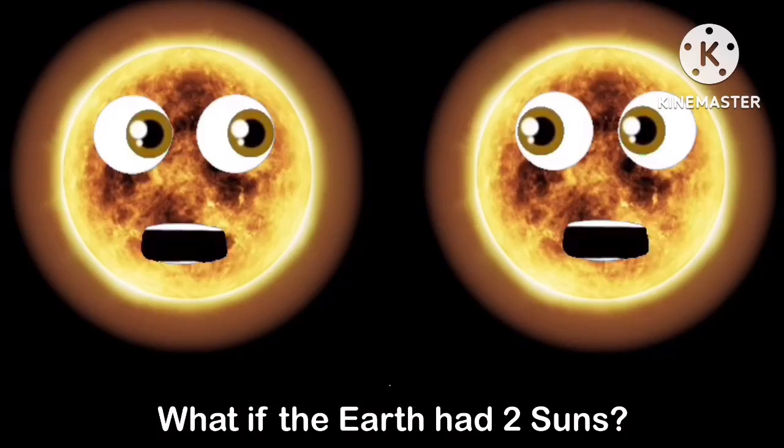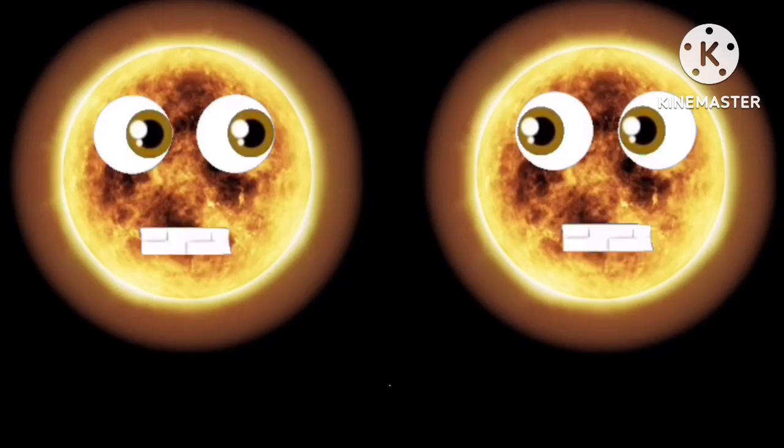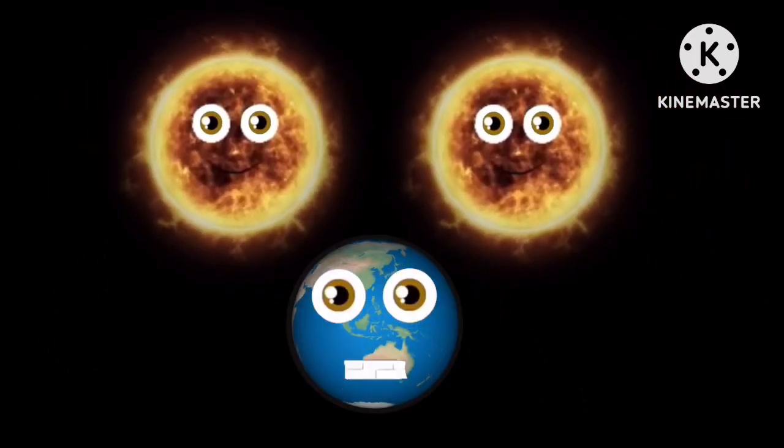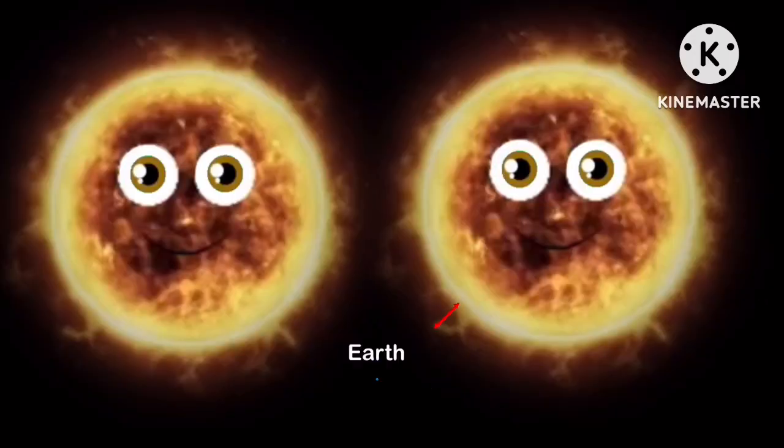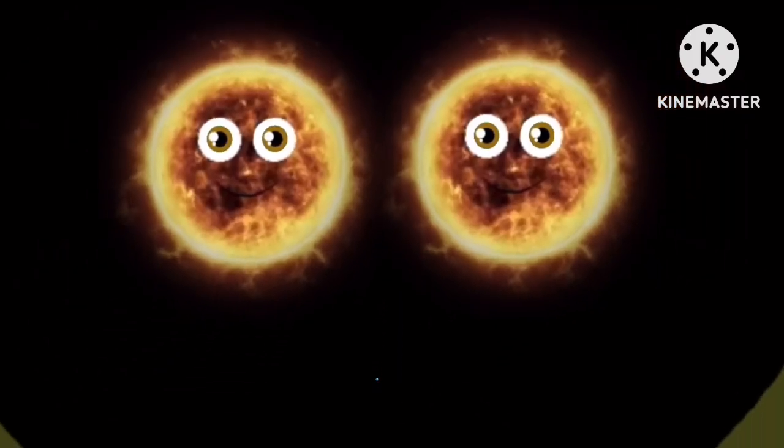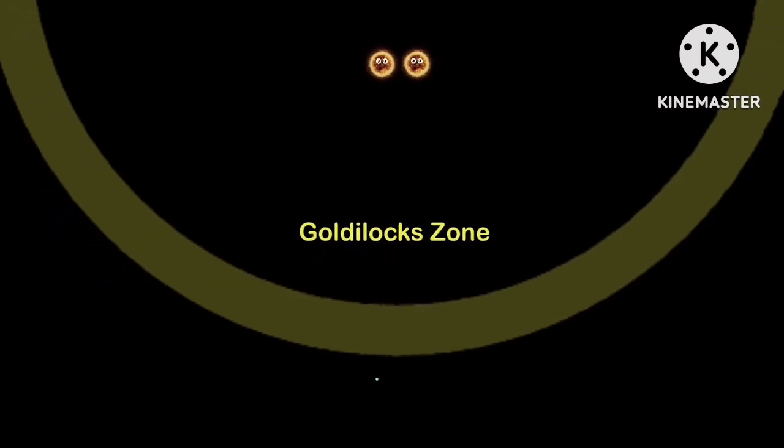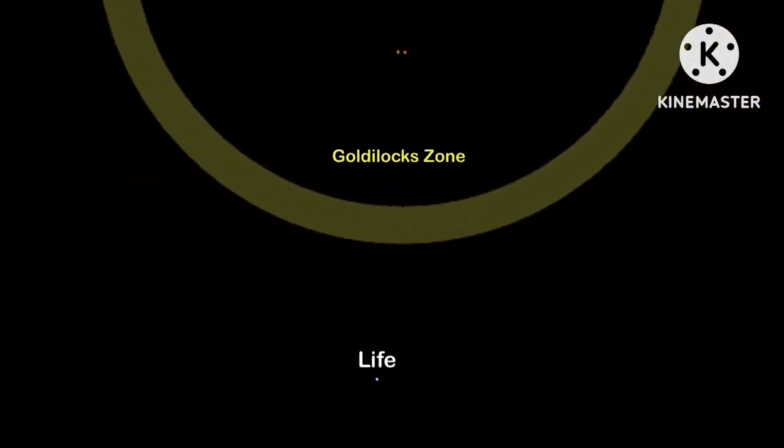If the stars were orbited by Earth at a safe distance, how far would the Earth have to orbit for life to exist? Earth would have to move past the current Goldilocks zone, that safe area we orbit our sun for life to grow.